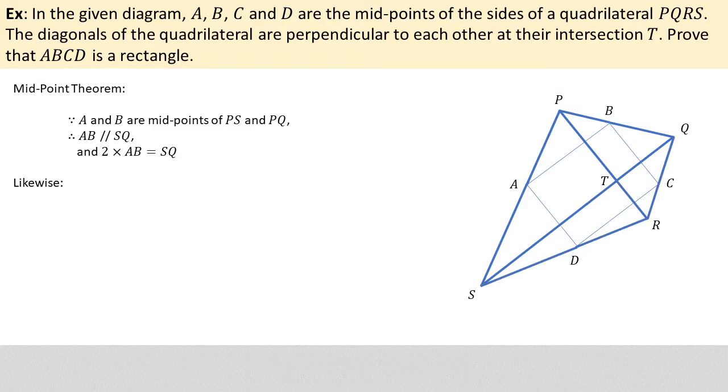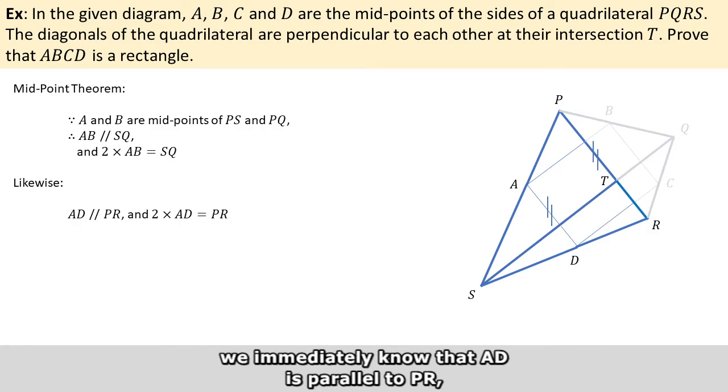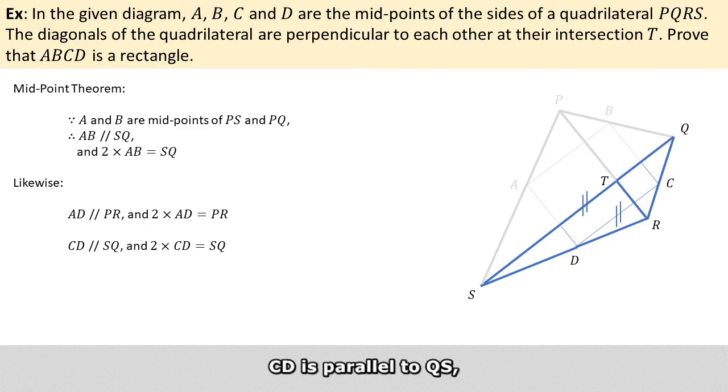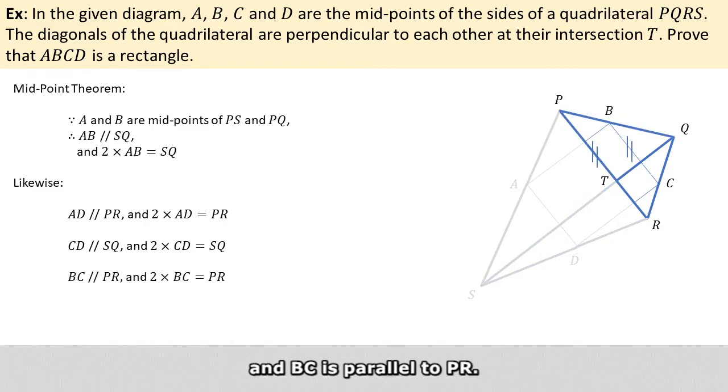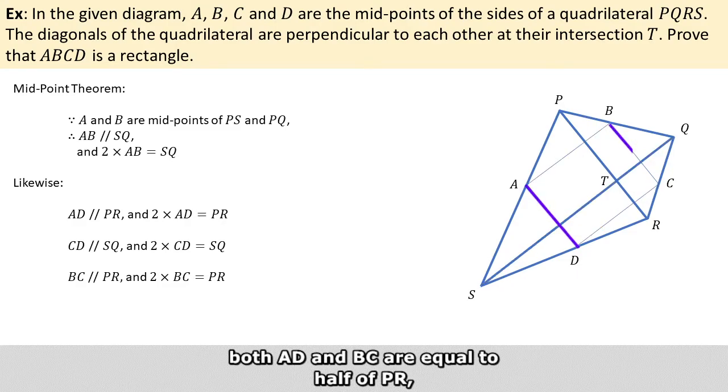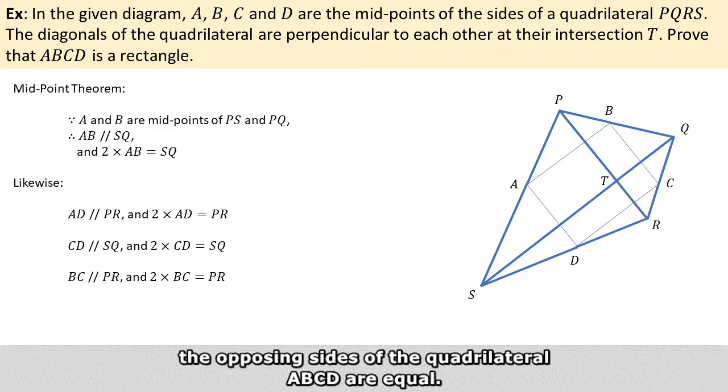Following the same idea, we immediately know that AD is parallel to PR, CD is parallel to SQ, and BC is parallel to PR. Because both AB and CD are equal to half of QS, and both AD and BC are equal to half of PR, the opposing sides of quadrilateral ABCD are equal.